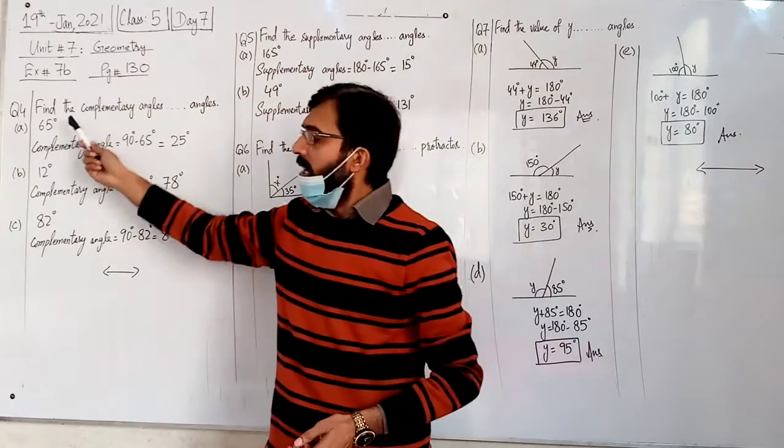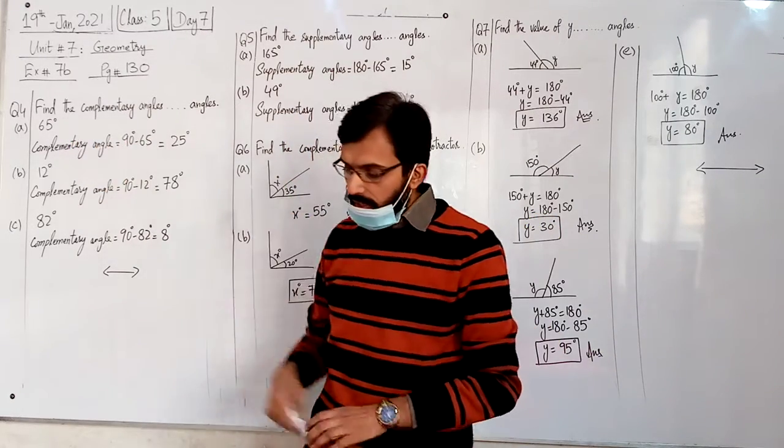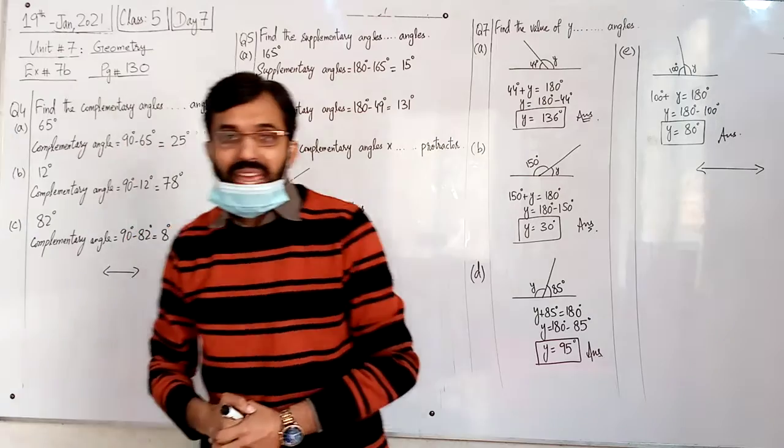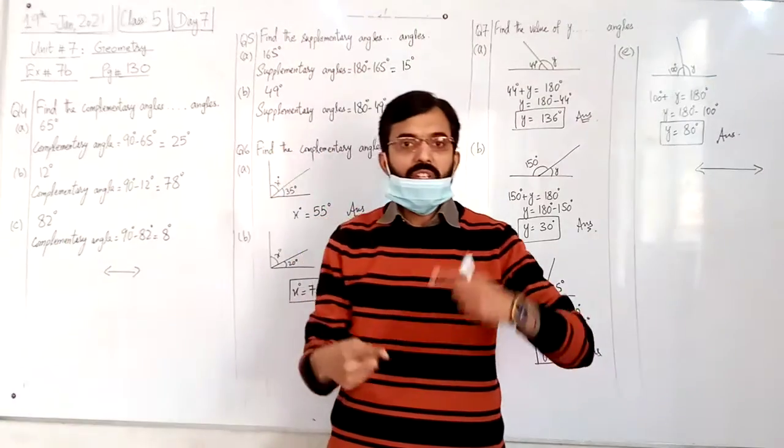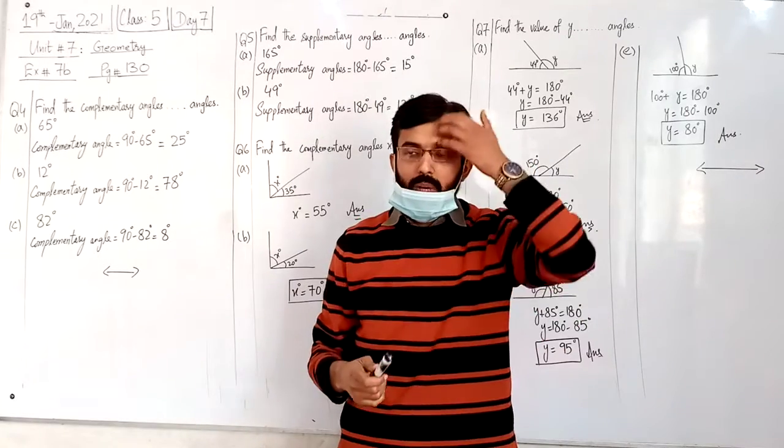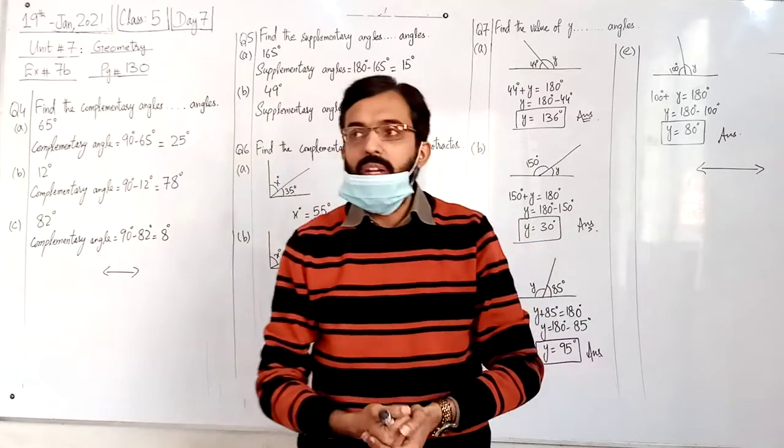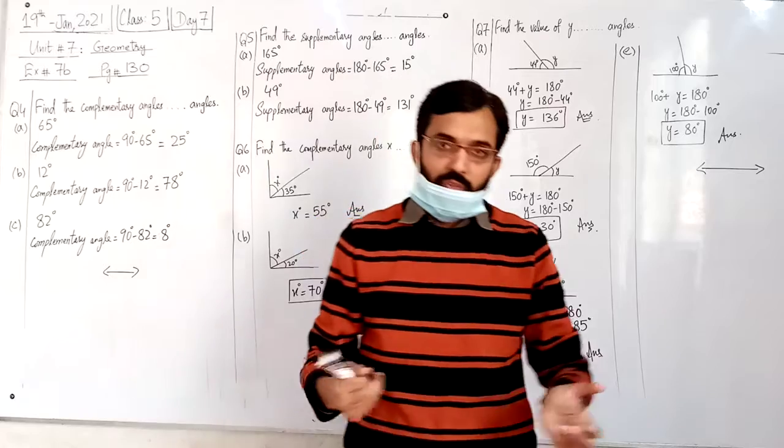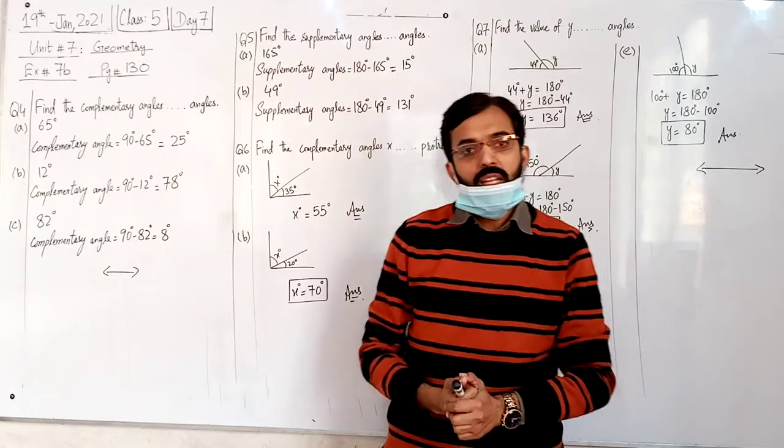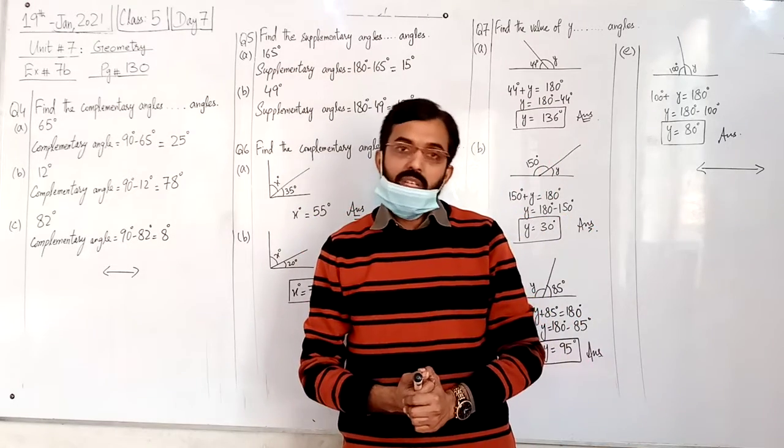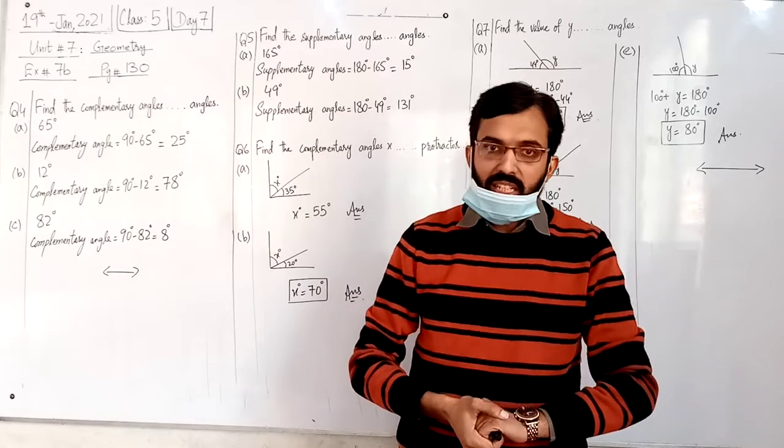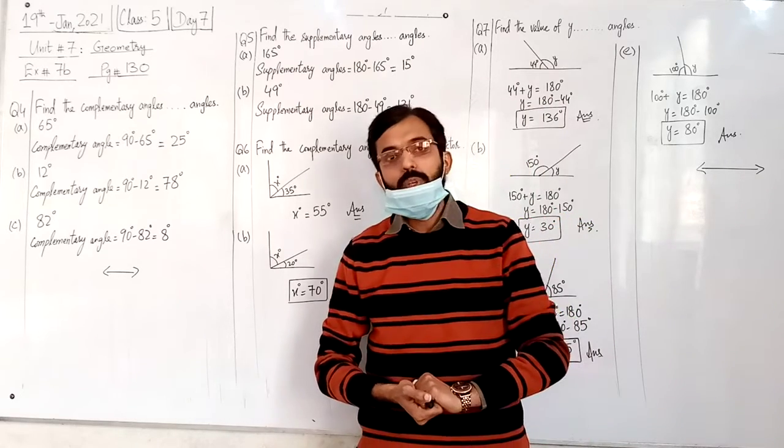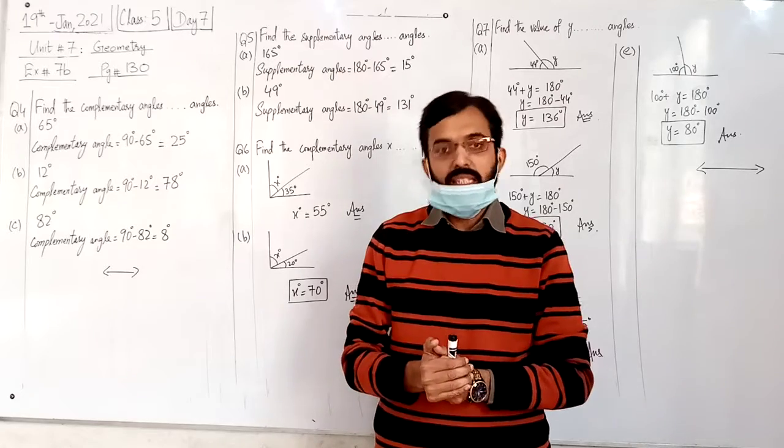Question number 4: find the complementary angles of the given angles. If you have given the angles, you will find the complementary angles. In previous lectures, I told you about complementary angles. There was a definition. Complementary angles are those angles which sum to 90 degrees. Two angles are said to be complementary if their sum is 90 degrees.